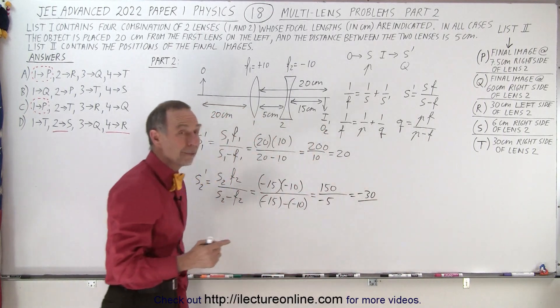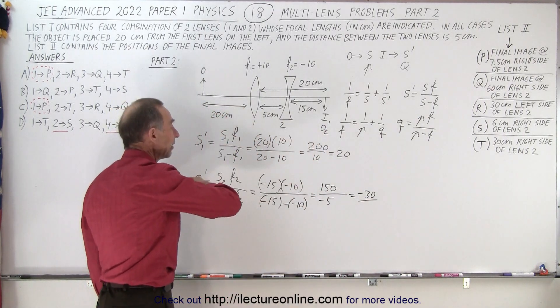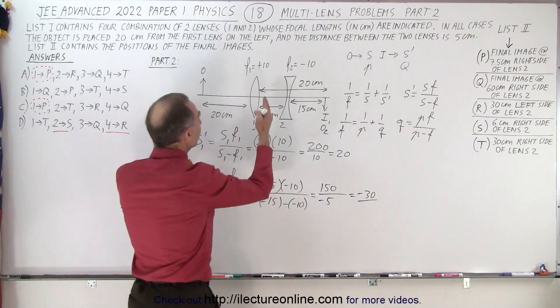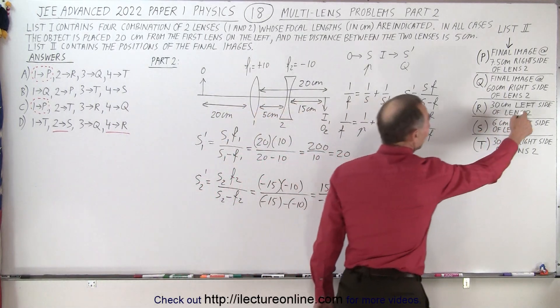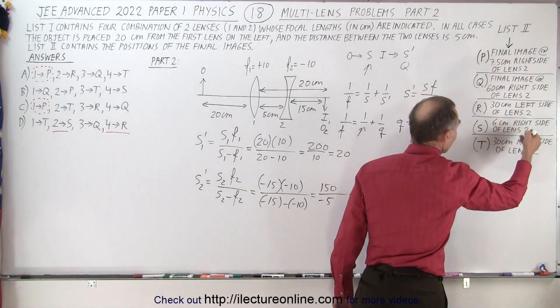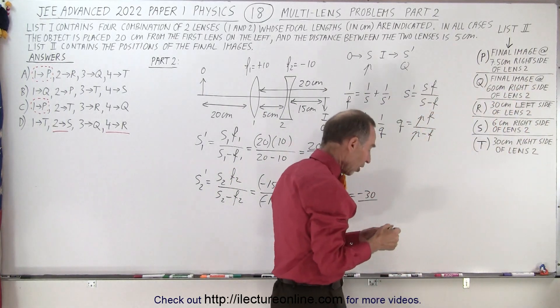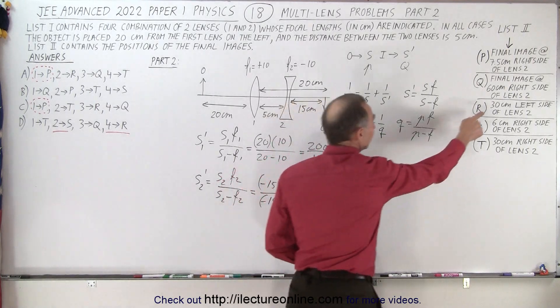So minus 30 meaning it's going to be in front of lens 2 instead of behind lens 2, 30 centimeters. Now there's only one possible answer here. There's only one answer where the image is on the left side. All the other ones are on the right side. So the correct answer is R. The number also matches up.